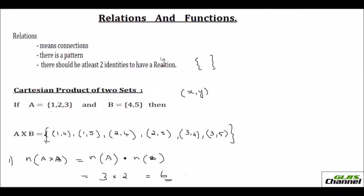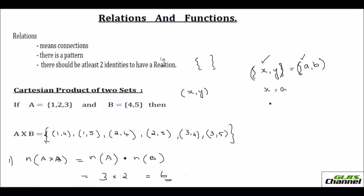A few things to mention about the Cartesian product: first, to find the number of elements in A cross B, you just multiply the number of elements in each set. Second, the ordered pairs are equal — if (X, Y) equals (A, B), that means two ordered pairs are equal only when X equals A and Y equals B — the first element should equal the first element of the second ordered pair, and Y equals B.